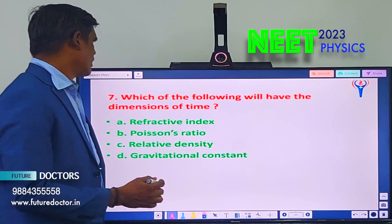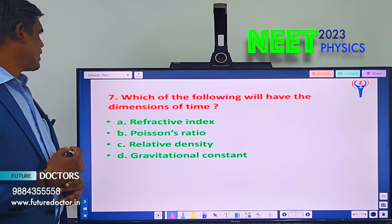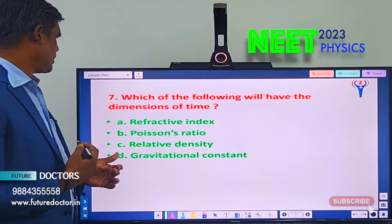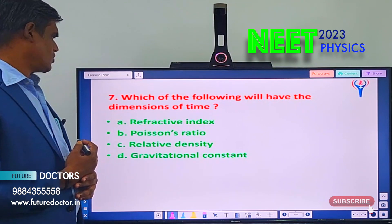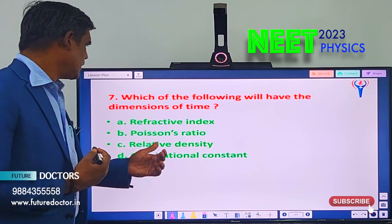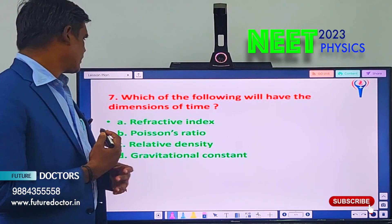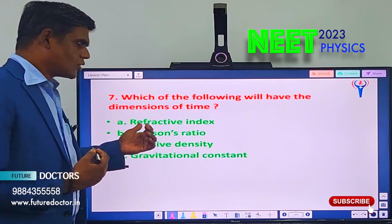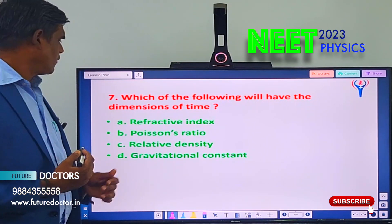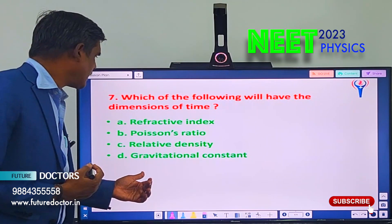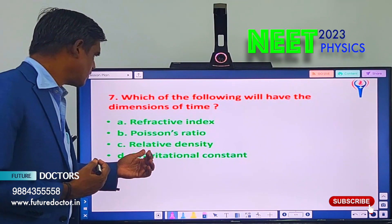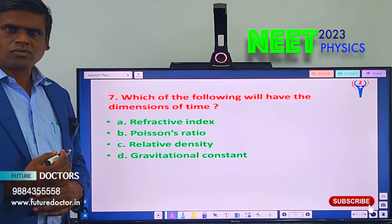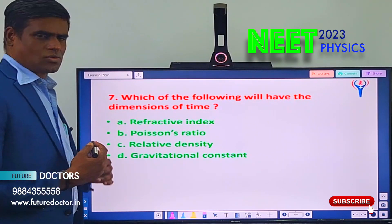Let us move to the last question. Which of the following will have the dimension of time? A) Refractive index, B) Poisson's ratio, C) Relative density, D) Gravitational constant. You should know the actual definitions for refractive index, Poisson's ratio, relative density, and gravitational constant. By using this idea, you can solve this question.